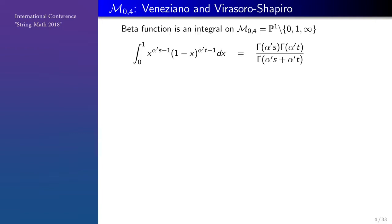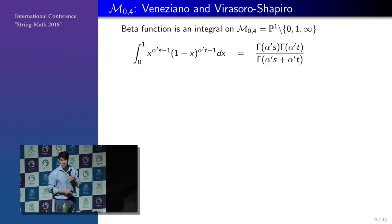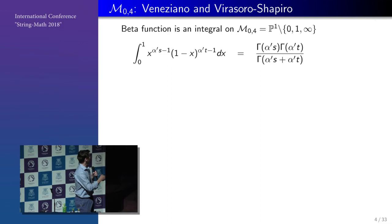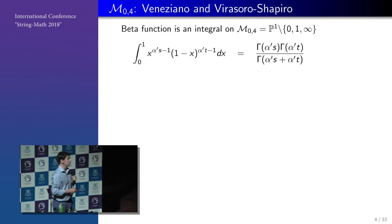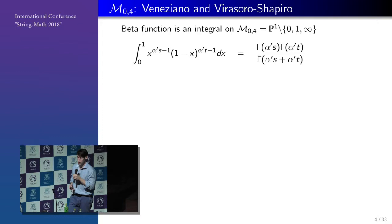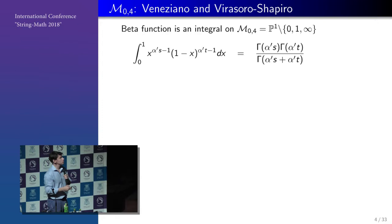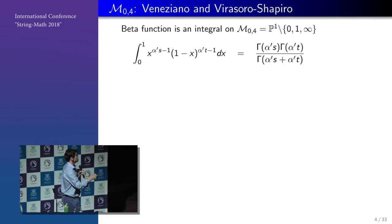Very classical results due to Veneziano and Virasoro: we're on the Riemann sphere with four particles, either on the Riemann sphere or on a disk. These four particles have four momenta, and out of these momenta you define Mandelstam variables S, T, and U. For example, S is just the momentum of particle one plus the momentum of particle two, squared. And it boils down to calculating just a beta function — a quotient of three gamma functions.